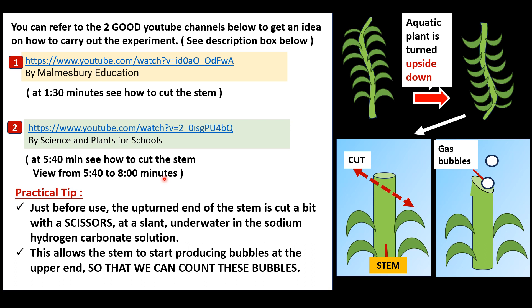The rest you can skip if you want, or you can also view the later part about the color of light — how to do the experiment to investigate the effect of color of light on the rate of photosynthesis. Now, the practical tip: what is the practical tip shown in these two videos at this time?